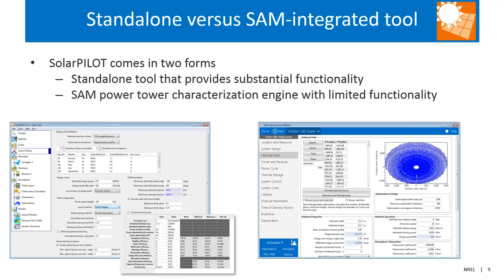SolarPILOT comes in two forms. The first is the standalone tool, which provides substantial functionality and is what we'll be talking about today. The second is what's baked into SAM — the SAM power tower characterization routines are handled by SolarPILOT. The standalone tool provides a lot of detail, calculating all the different efficiency mechanisms, peak and minimum flux, and more, whereas the SAM version is a high-level total heliostat field optical performance with limited configuration options.